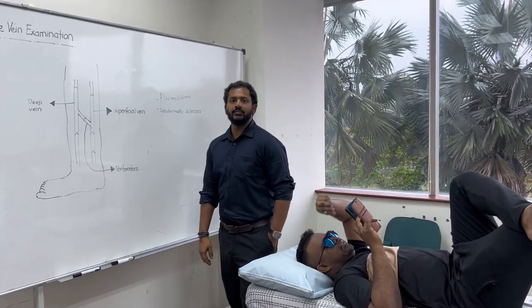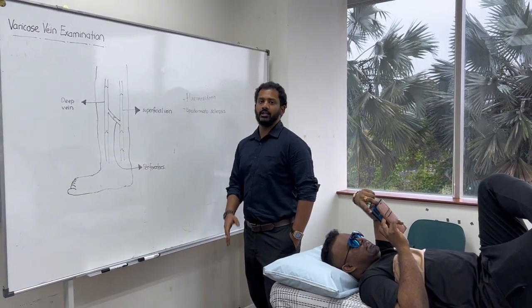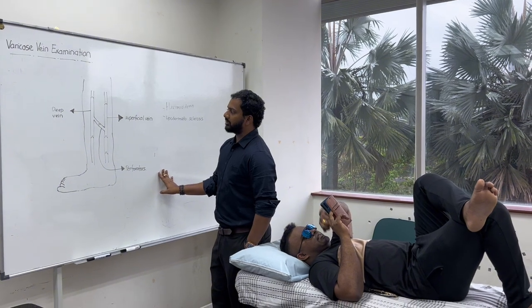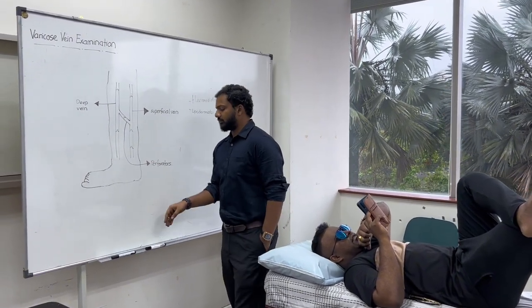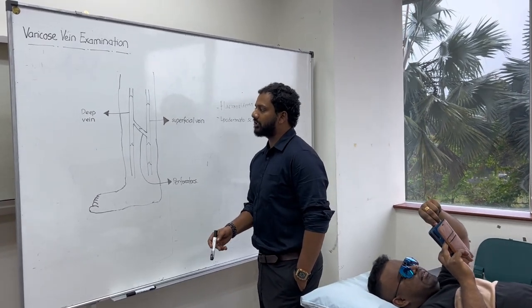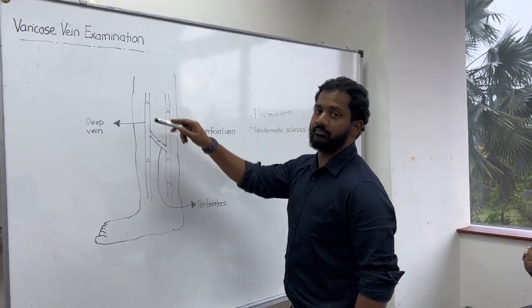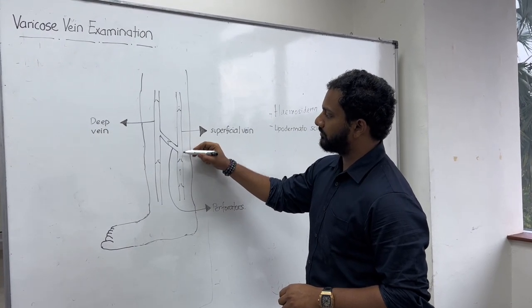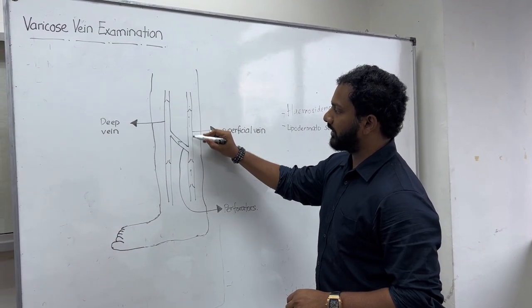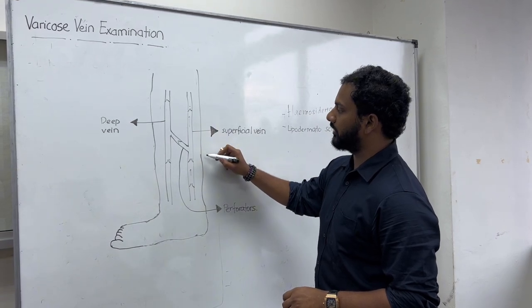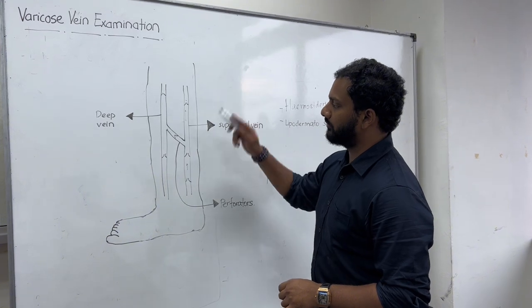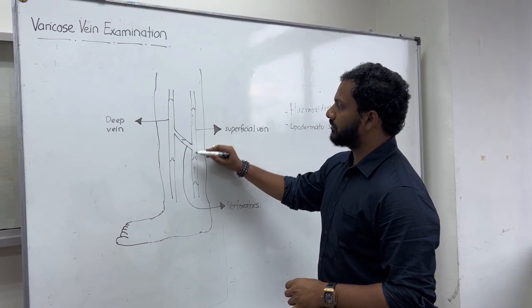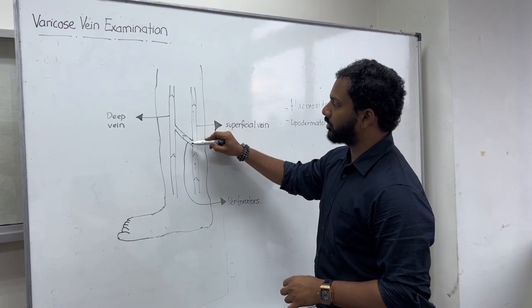Before going to the examination of varicose veins, we need to look at some theory so we understand the examination better. In varicose veins, we get superficial dilated and tortuous veins. Looking at the lower limb venous system, we have the superficial vein and the deep veins. These are the valves — they allow blood to flow in a single direction, preventing backflow of blood.